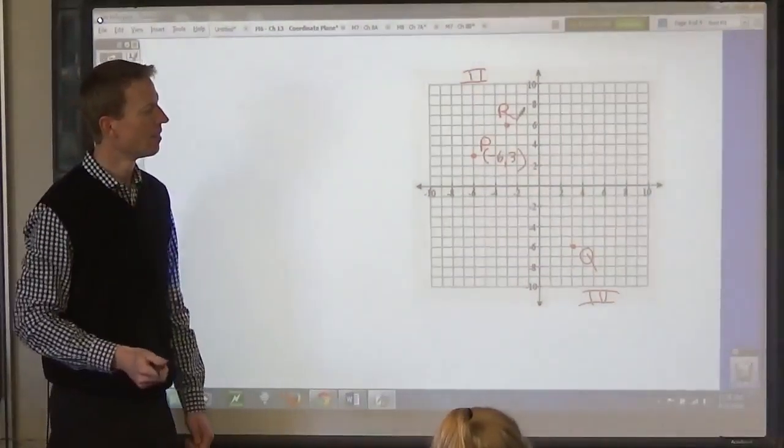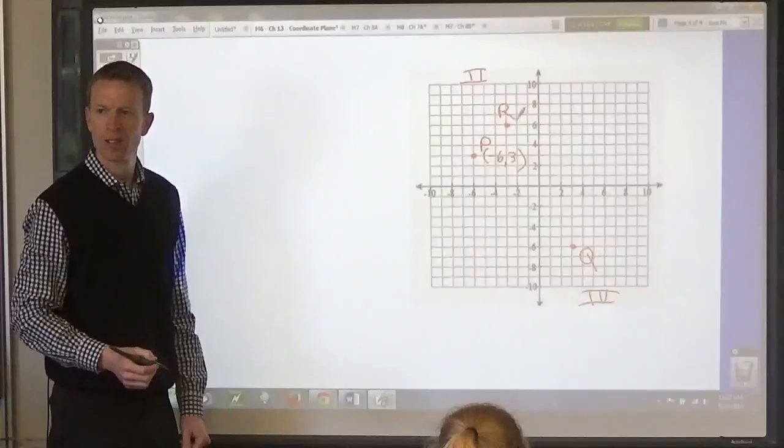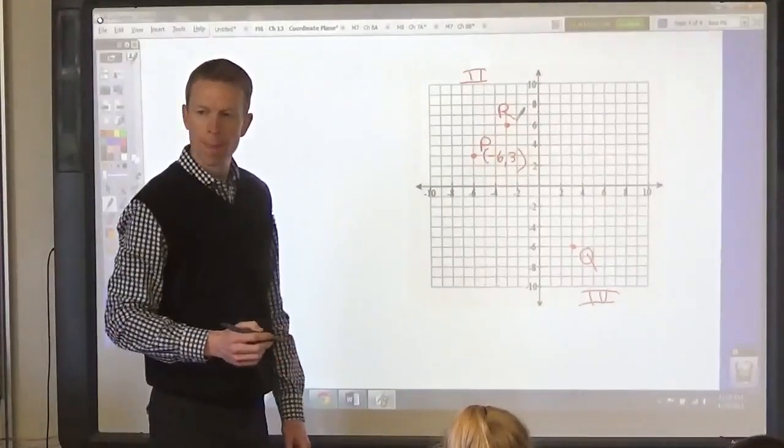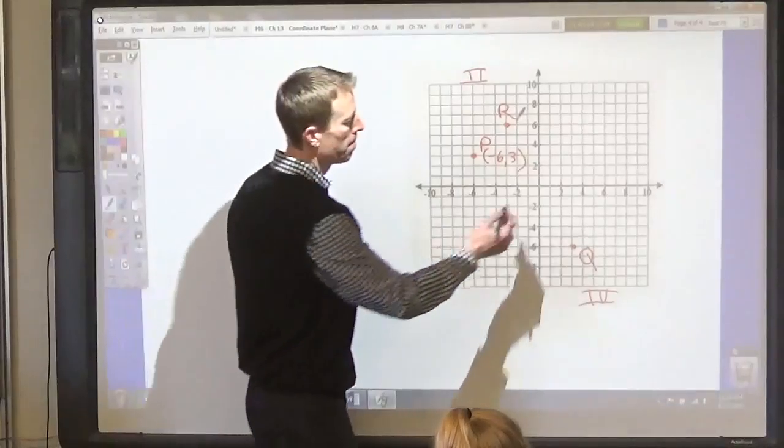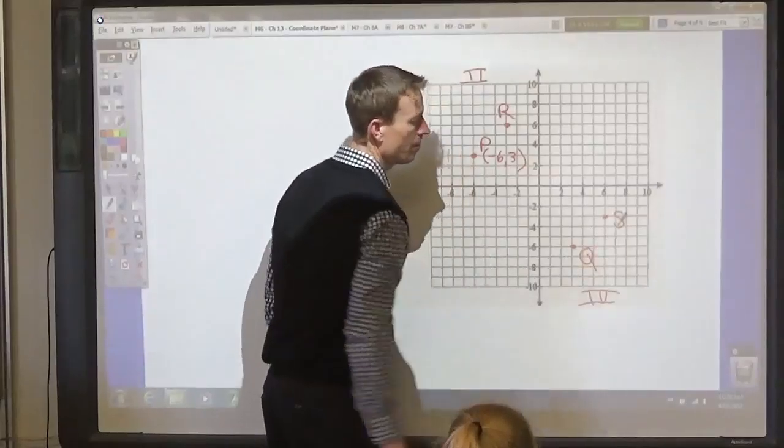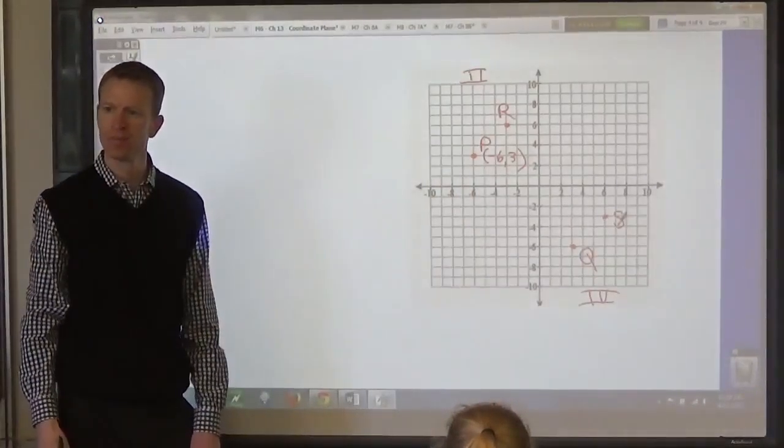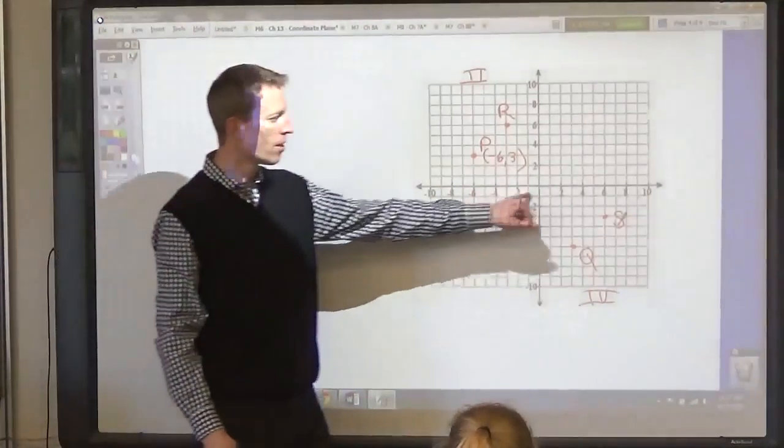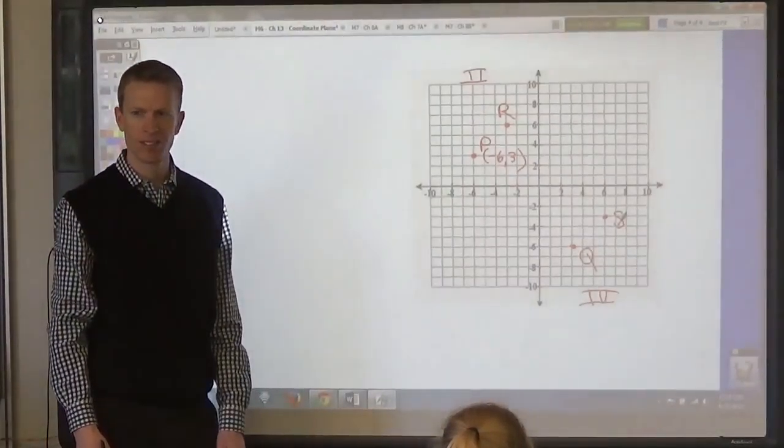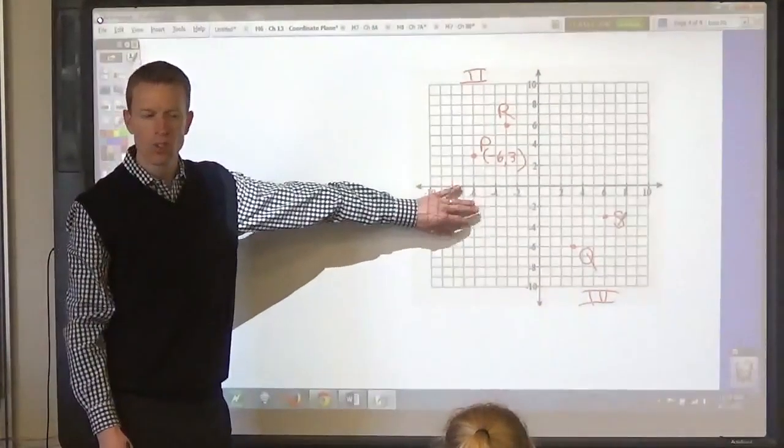Sam? Number 4. Yeah, what's the next letter? S, and it's 6, negative 3. Correct? So 6 to the right, 3 down. Any questions so far? Let's go to the next page.